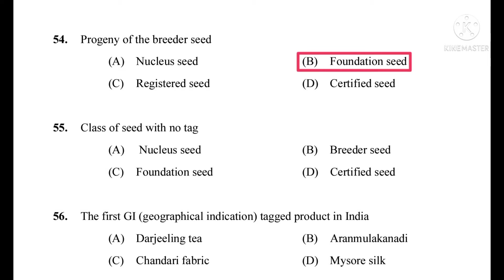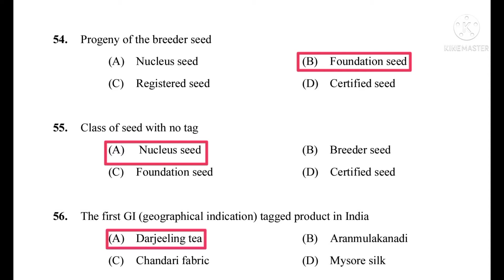Question number 55: Class of seed with no tag. The correct answer is nucleus seed. Question number 56: The first GI (geographical indication) tagged product in India. The correct answer is Darjeeling tea.